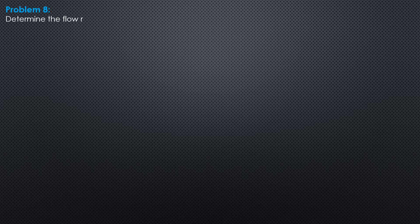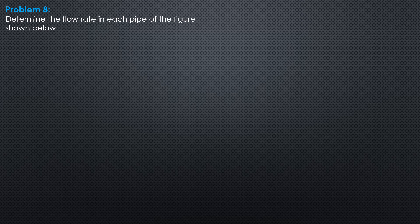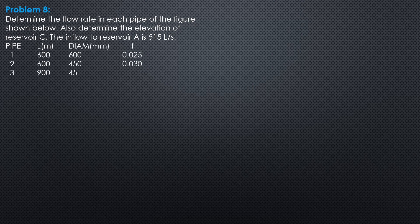Example 8. Determine the flow rate in each pipe of the figure shown below. Also, determine the elevation of Reservoir C. The inflow to Reservoir A is 515 liters per second.